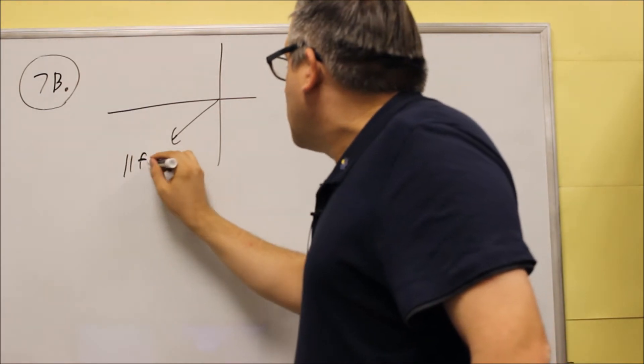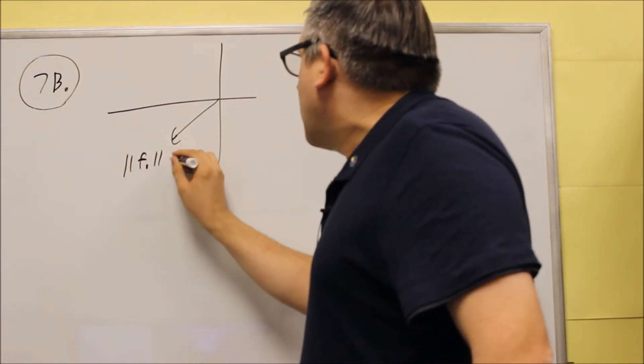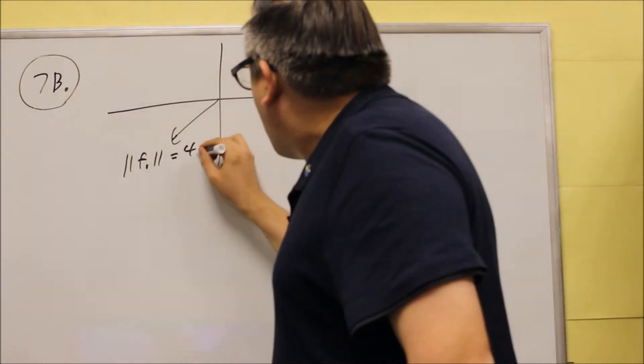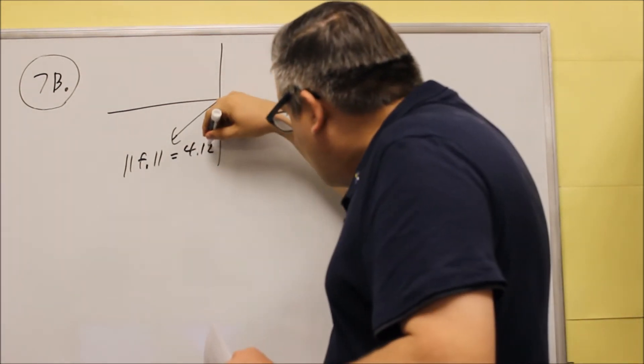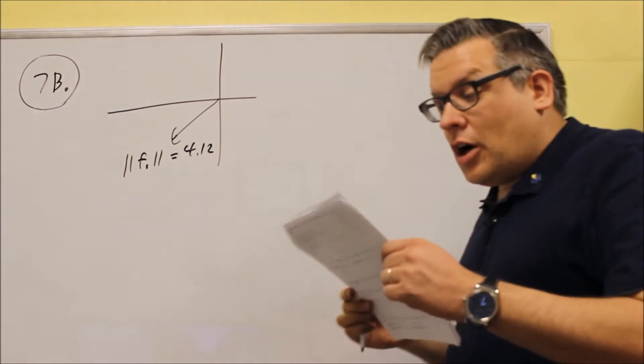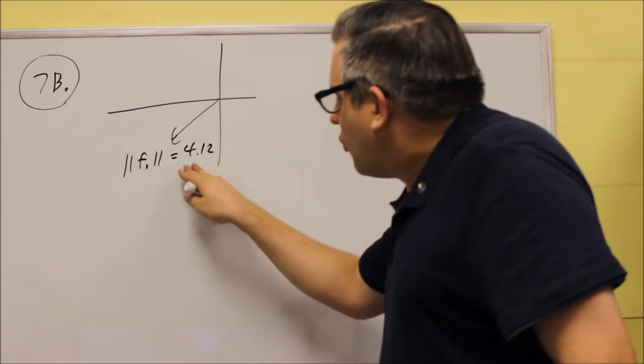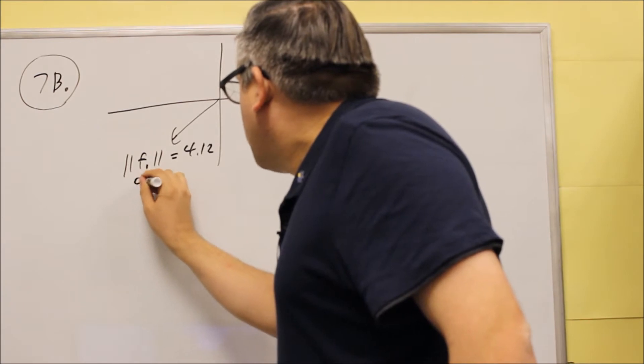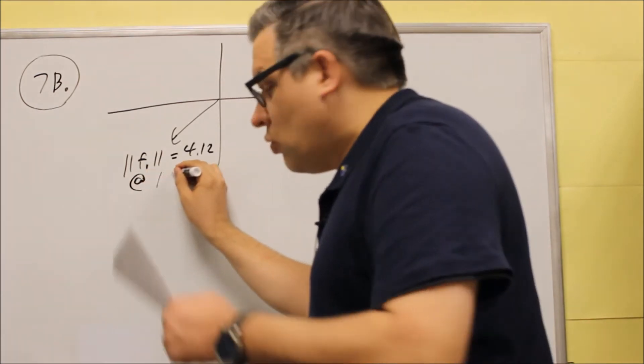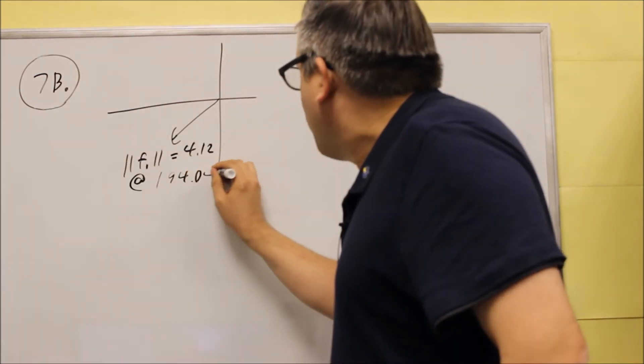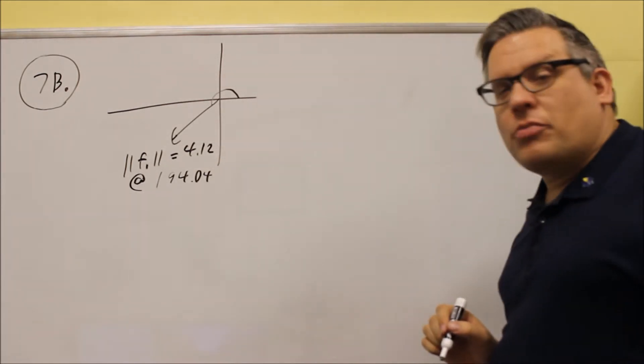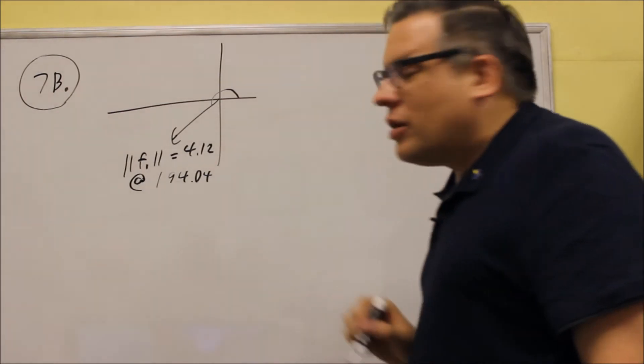Now I'm going to label this here as F1, and we're given that the magnitude of that force is going to be 4.12, and that's 4 pounds, 4.12 pounds there, and I'm just going to go ahead and put the angle at 194.04 degrees. So that would technically be measured over from there, and so that would be the first force.